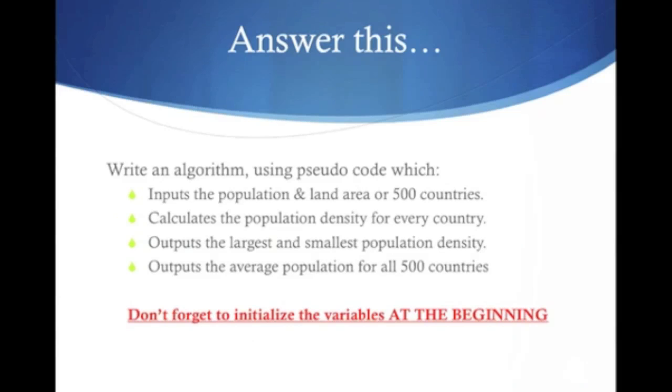Write an algorithm using pseudocode which inputs the population and land area for 500 countries, calculates the population density for every country, outputs the largest and smallest population density, and outputs the average population for all 500 countries. Don't forget to initialize the variables at the beginning. This is the hardest exam-style question you would probably get in any GCSE test.